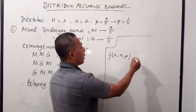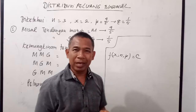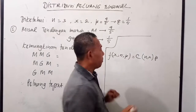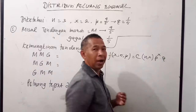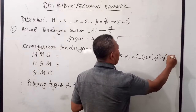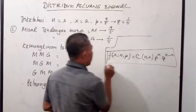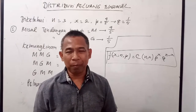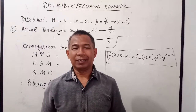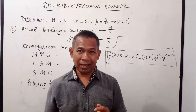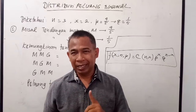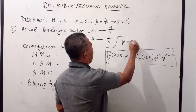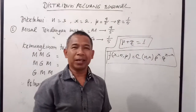Maka nilai peluangnya itu ditentukan oleh kombinasi. Seperti biasa kita menggunakan kombinasi dari N dan X, dikali dengan peluang berhasil yaitu P dipangkatkan dengan X, kali peluang gagalnya Q dipangkatkan dengan N dikurangi X. Sekali lagi, kalau peluang sukses P, peluang gagal Q, maka P ditambah Q harus sama dengan 1.